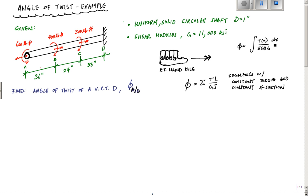This equation is for when you have a non-uniform shaft where the torque is varying. But this equation only works when you have segments with constant torque and constant cross-section, which usually only works when you have concentrated torques applied.